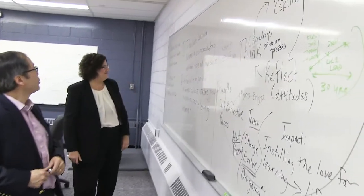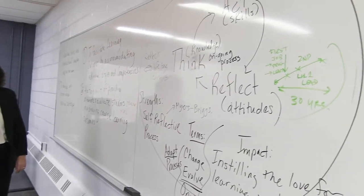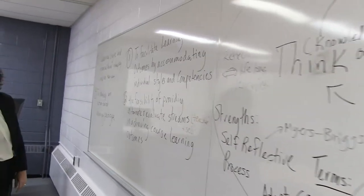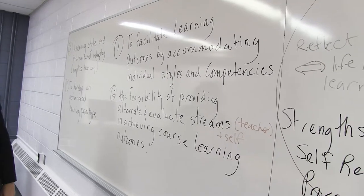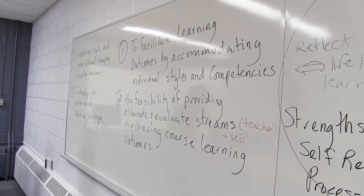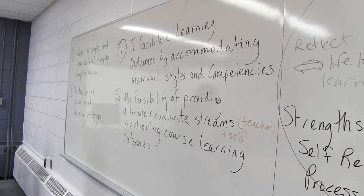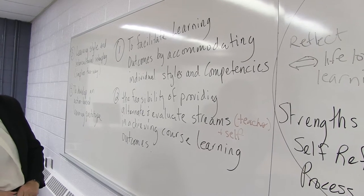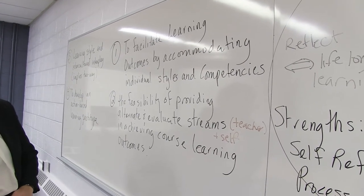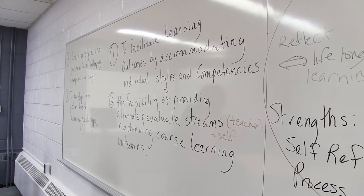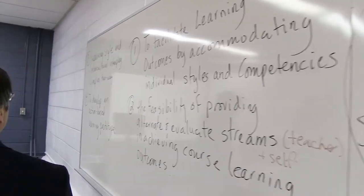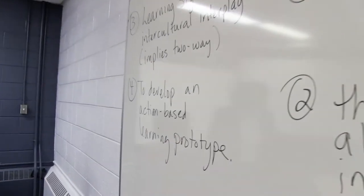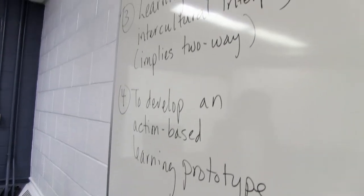I think you highlighted the key objectives here quite nicely. We're going to facilitate learning outcomes by accommodating individual styles and competencies. We're going to explore the feasibility of providing alternative and additional evaluation streams for not just the teacher but oneself, and this is to achieve course learning outcomes. Third, we're going to examine the interplay between learning styles and intercultural tendencies. And finally, we're going to develop an action-based learning prototype, which will occur over the next couple of months.